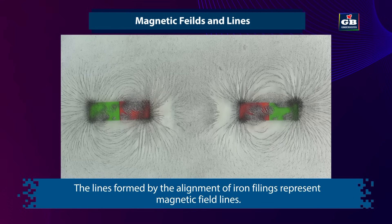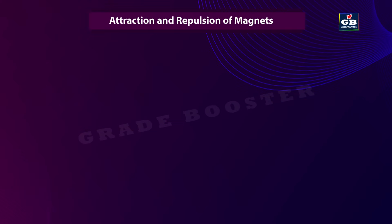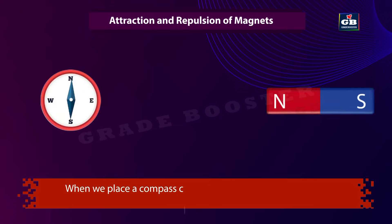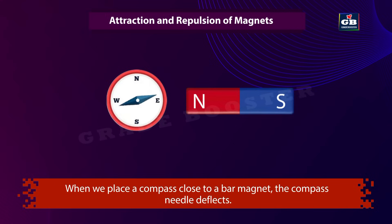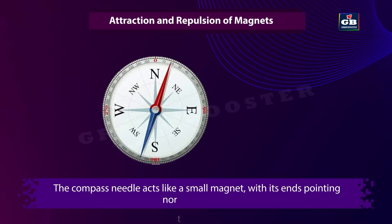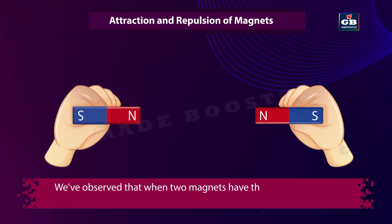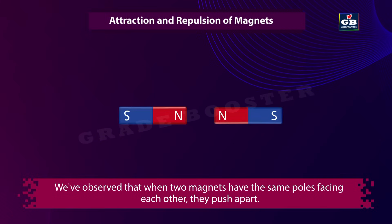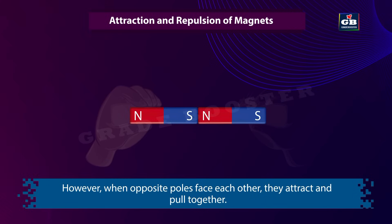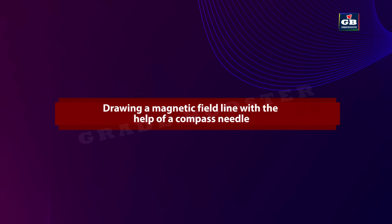The lines formed by the alignment of iron filings represent magnetic field lines, showing attraction and repulsion of a magnet. When we place a compass close to a bar magnet, the compass needle deflects. The compass needle acts like a small magnet with its ends pointing north and south. When two magnets have the same poles facing each other, they push apart; when opposite poles face each other, they attract and pull together.